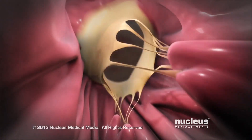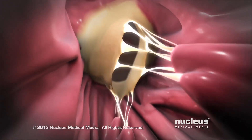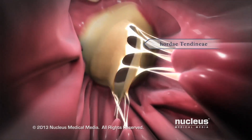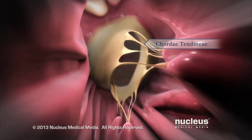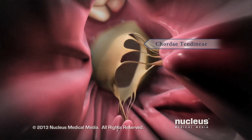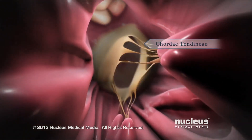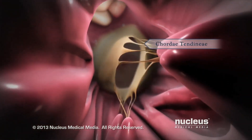Strong, thin tissues, called chordae tendinae, hold your valves in place during the forceful contractions of your ventricles.